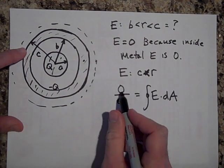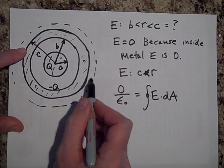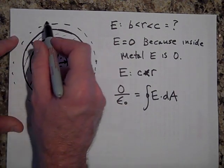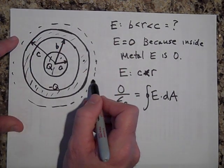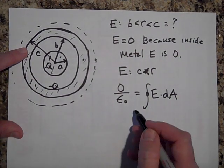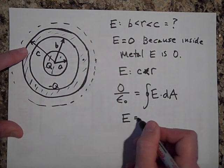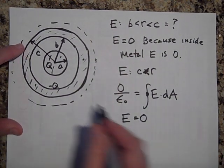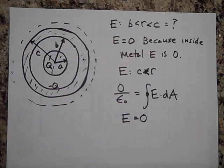So since there's no charge enclosed, there can't be any flux through this surface. And since there's no flux through the surface, there can't be any E there. So E is equal to zero out there when you're at that distance.